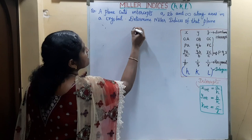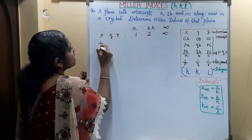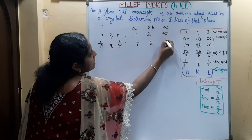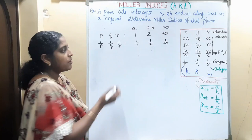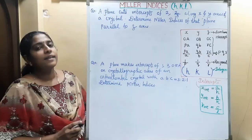Next problem: A plane cuts intercepts A, 2B, and infinity along the axes. Determine the Miller indices. P, Q, R = 1, 2, ∞. Taking the reciprocal: 1/1, 1/2, 1/∞ = 1, 1/2, 0. There is a fraction, so multiply by LCM = 2: 2, 1, 0. The Miller indices of the given plane are (2, 1, 0).